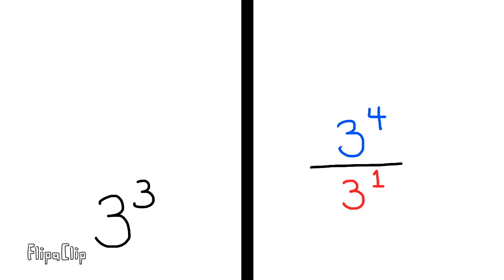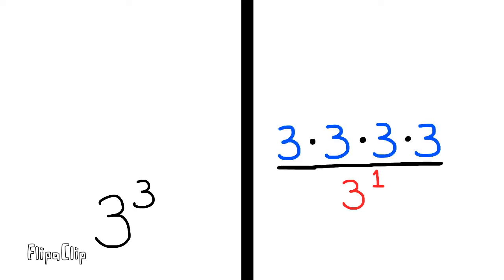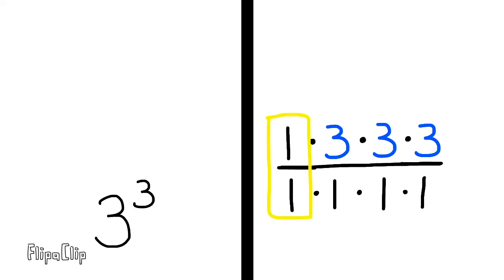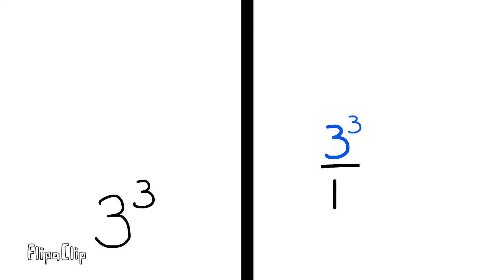On the right side of the screen, we can represent three to the power of four as three times three times three times three. On the bottom of the fraction, three to the power of one is just three. Three divided by three equals one, so they cancel each other out. What's left is three times three times three, or three to the power of three over one, which is three to the third power — and of course, 27.